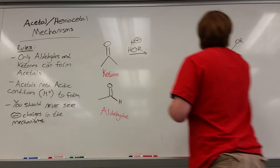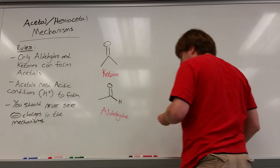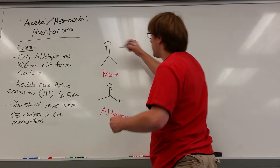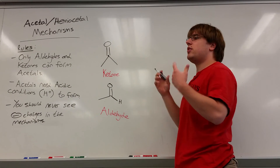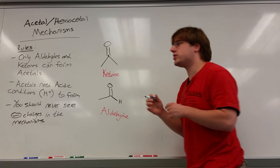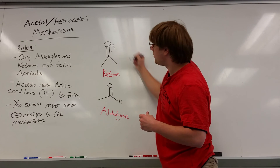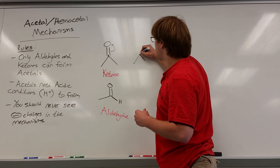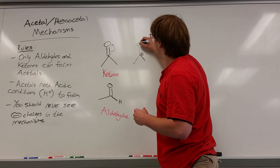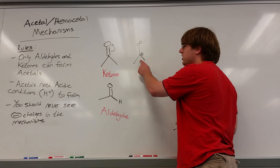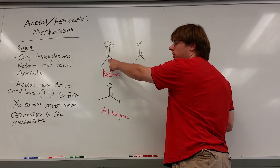When we talk about carbonyl chemistry, we see that the carbon of that double bond O is very electropositive. The double bond O can always resonate up into that oxygen, giving us a resonance structure of carbon-positive O-minus. So it makes sense that nucleophiles would like to attack this carbon with their electrons.